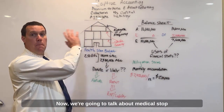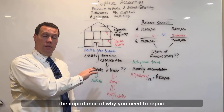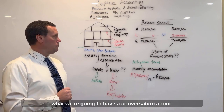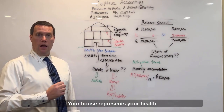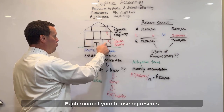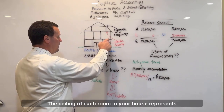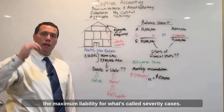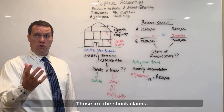We're going to talk about medical stop loss here because it's an easier demonstration on the importance of why you need to report what we're going to have a conversation about. In this schematic here, this is a house. Your house represents your health plan budget for your employees. Each room of your house represents an employee or a covered member. The ceiling of each room represents the maximum liability for what's called severity cases — those are the shock claims.